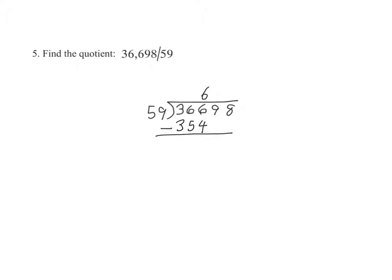Completing the subtraction leaves us with 12. Now we tend to the next digit, 9, and we bring it down.